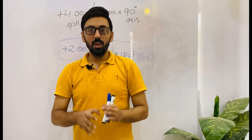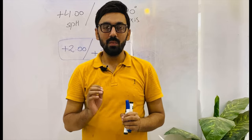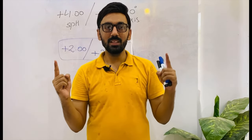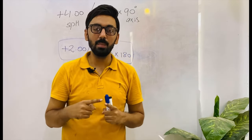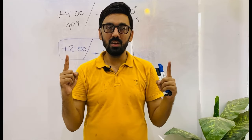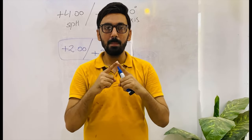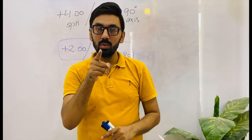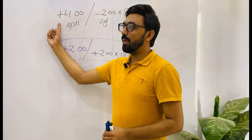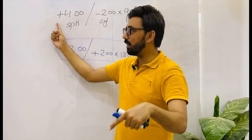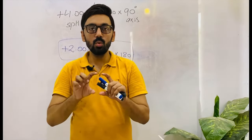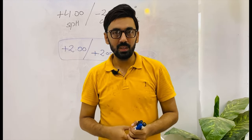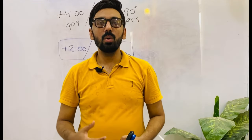So remember: if you find two types of prescriptions — this is a very important point for VIVA and theoretical examinations — first, if the power of the sphere and the cylinder are the same with opposite signs, you have to transpose it. Second, if the spherical correction is greater than the cylindrical correction with opposite signs, you have to transpose it. In these two sorts of prescriptions, you have to transpose to answer properly and appropriately. In the next video, we will discuss many new things about optometry. See you.